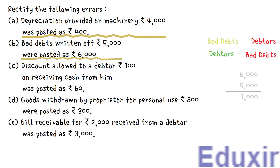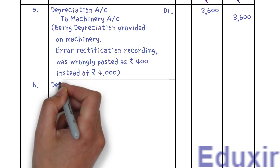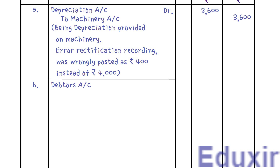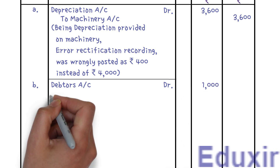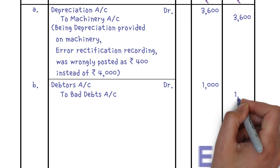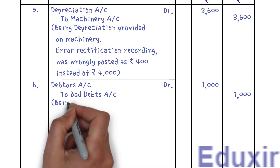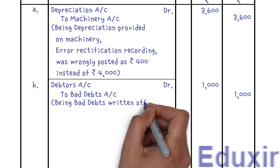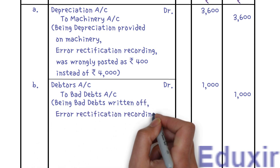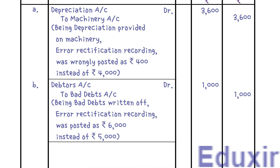With this analysis, let us proceed with journalizing these error rectification entries. We enter debtors account as the debit entry (Dr) with 1,000 rupees. The credit entry is bad debts account with 1,000 rupees. The narration reads: being bad debts written off, error rectification recording — was posted as 6,000 rupees instead of 5,000 rupees.